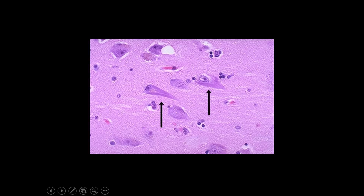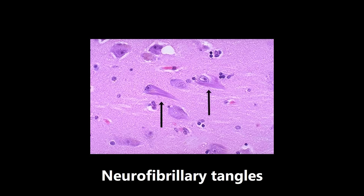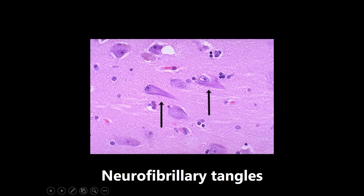This is going to be the last image: neurofibrillary tangles. We already talked about Lewy bodies, which are composed of alpha-synuclein. In this case, neurofibrillary tangles are protein aggregates also found in neurons, and they are caused by hyperphosphorylation of tau protein — very high yield. These neurofibrillary tangles are nearly pathognomonic for Alzheimer's disease. So you really want to know Lewy bodies and their associations, and neurofibrillary tangles and their associations as well.